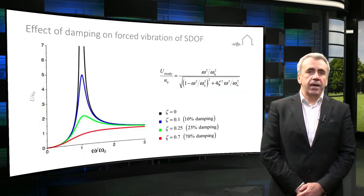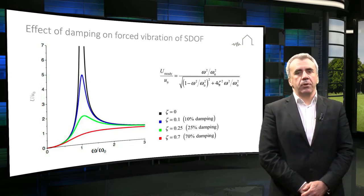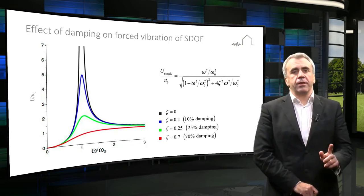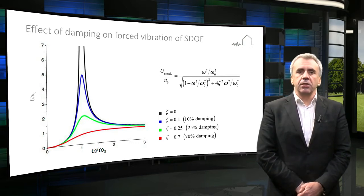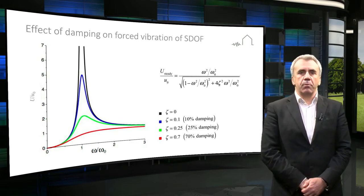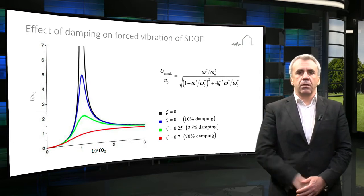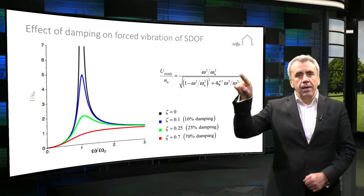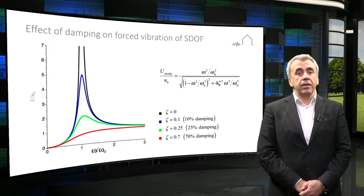As to the dynamic amplification factor shown in this slide — you remember it from the last lecture — we can see that damping has a very significant effect on vibration at resonance. Even a small percentage of damping limits the motion of the structure at resonance significantly.